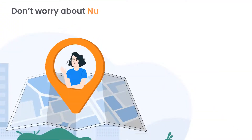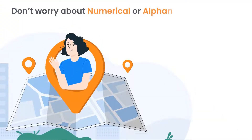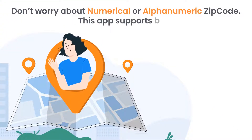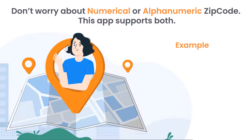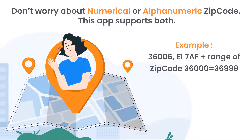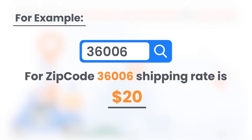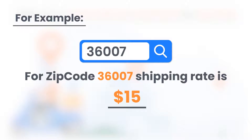Don't worry about numerical or alphanumeric zip codes — this app supports both. For example, zip code 36006 has a shipping rate of $20, and if the zip code is 36007, the shipping rate is $15.